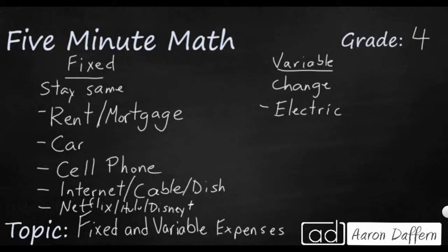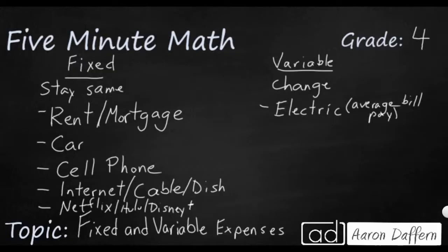Usually your electric bill goes down in the wintertime because you're not using as much. This can be fixed, though — sometimes there's something called average bill pay, where the electric company takes your electric bills over the entire last year, takes the average, and charges you that same amount every month. So sometimes that can make it a fixed expense if you have average bill pay.